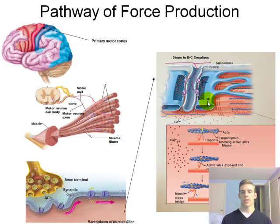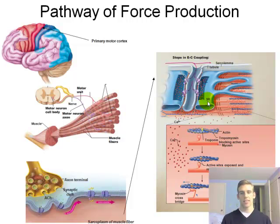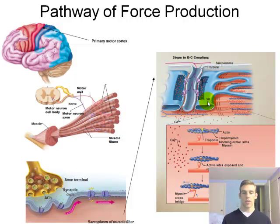This is where troponin and tropomyosin come into play. These regulatory proteins wrap around the actin filament. Calcium binds to troponin, causing troponin and tropomyosin to shift their position on actin. Normally they block the active sites on actin — the sites where myosin can bind. When calcium comes in, they shift out of the way, allowing myosin to bind to actin and produce force and velocity. At rest, these regulatory proteins prevent contractions by blocking myosin from binding to actin.